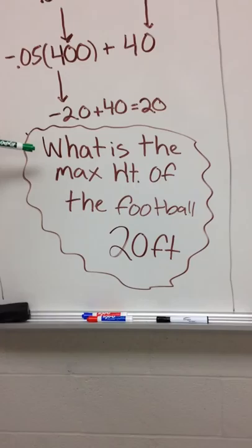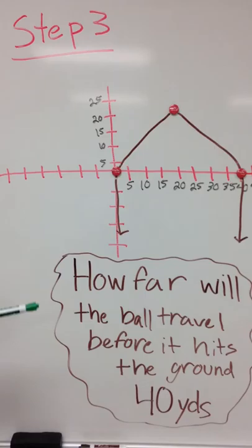Then you come over here to step 3, where we graph it. The ball starts at 0 because it starts on the ground, so it starts at (0, 0). Then it hits its max height of 20, then comes down to 40. The 40 is how far the ball will travel before it hits the ground: 40 yards.